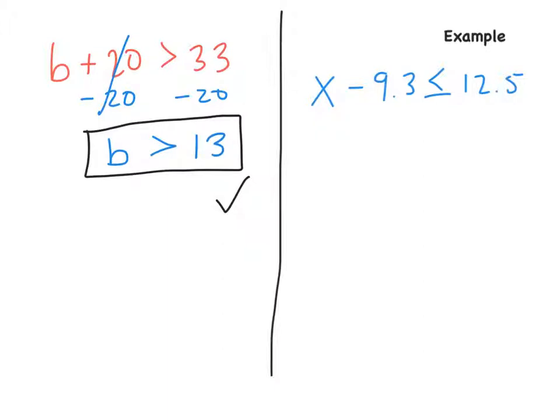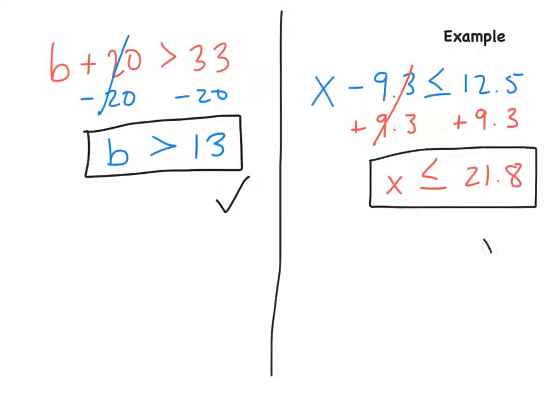Now the second one, if we have x minus 9 and 3 tenths is less than or equal to 12 and 5 tenths or 12 and a half. So remember, what is the opposite of minus 9 and 3 tenths? You have to add 9 and 3 tenths. You add 9 and 3 tenths to both sides. So the 9 and 3 tenths on the left cancel out. And we have x is less than or equal to 21 and 8 tenths. So x is less than or equal to 21 and 8 tenths.